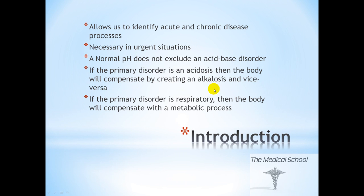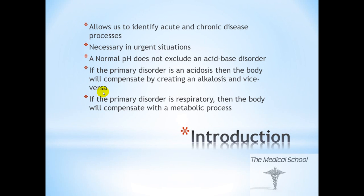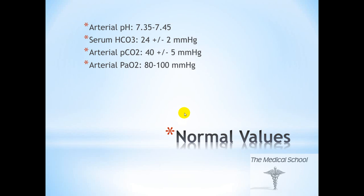Two other important points. One, if you have a primary disorder that's an acidosis, then the body will tend to compensate with an alkalosis, and vice versa. In addition, if a primary disorder is mainly respiratory, whether it be acidosis or alkalosis, the body will compensate with the metabolic process, either an acidosis or an alkalosis. These are the main points to remember as you understand acid-base disorders.